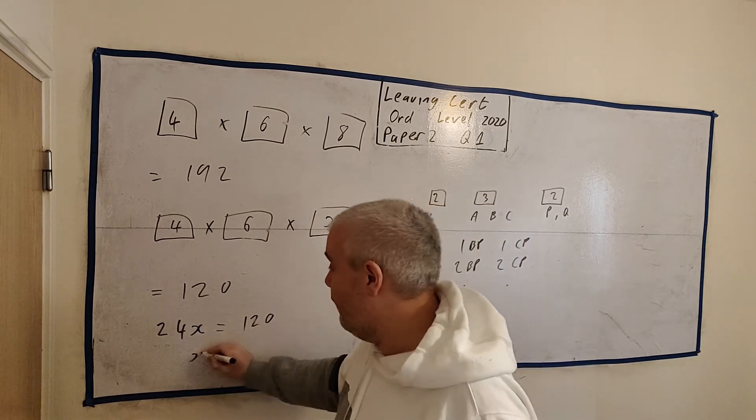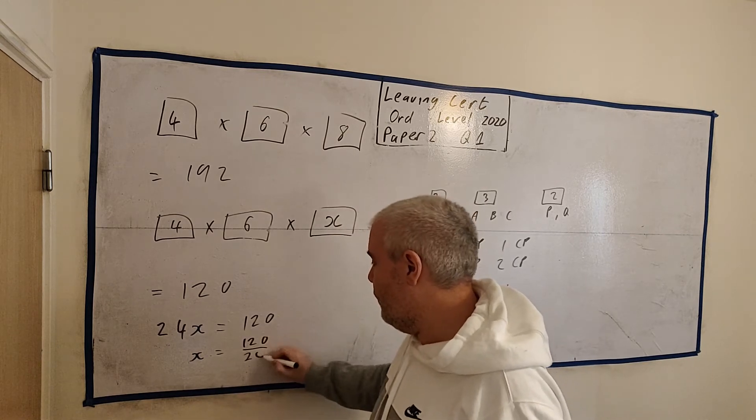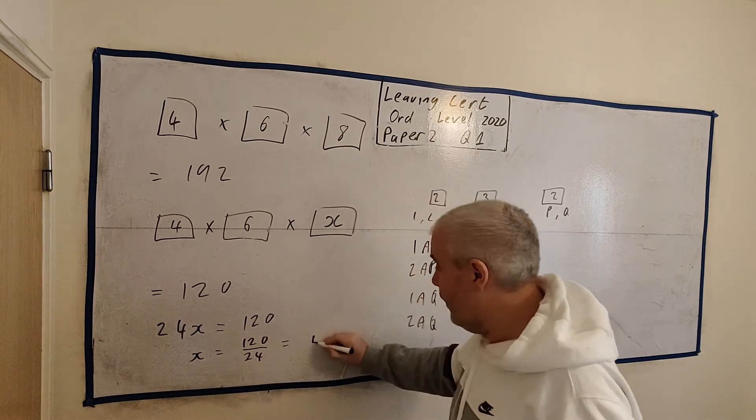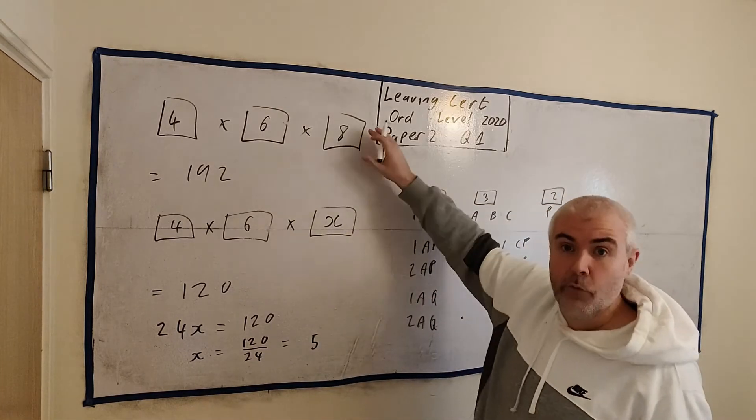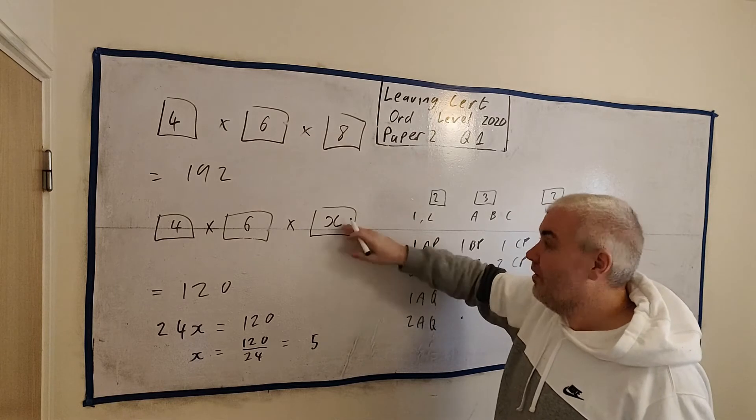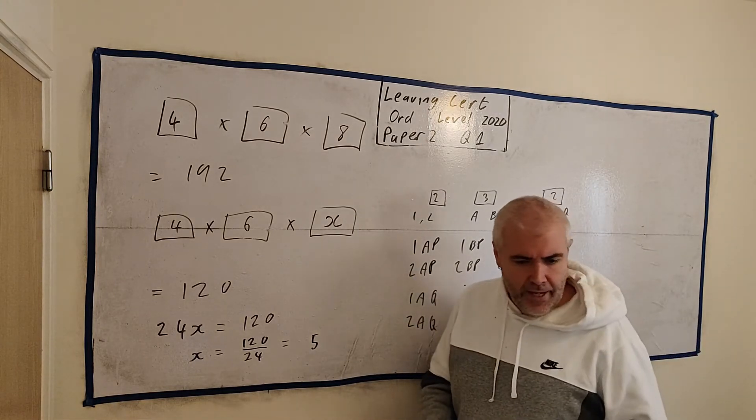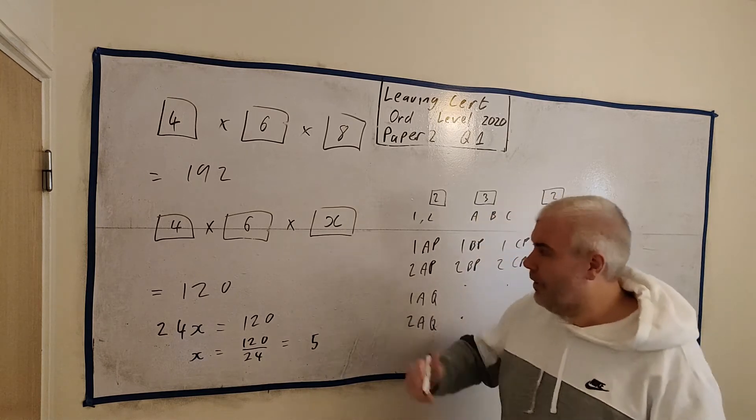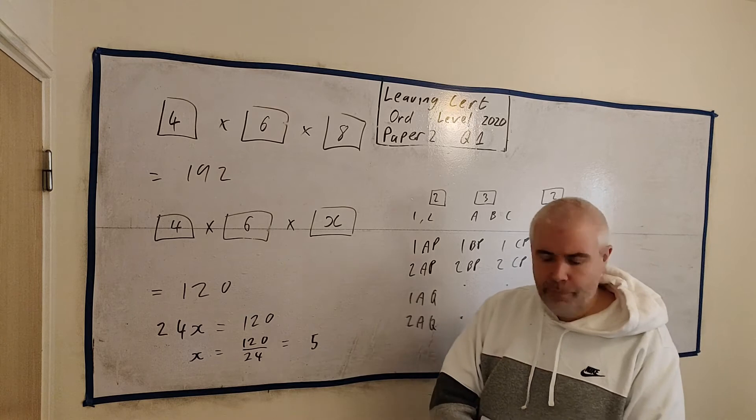So in this case, 24X equals 120. Let's do maths then. Move the 24. Divide both sides by 24. We get 120 divided by 24. Put that into a calculator. We get five. And that makes sense to us. There was eight desserts, there's some missing. Five. So there's five desserts. That's what they asked, didn't they? Yeah, they did.